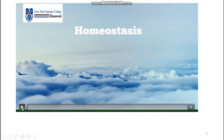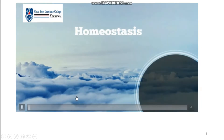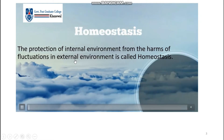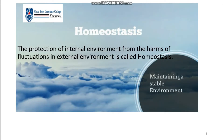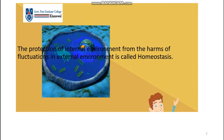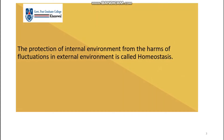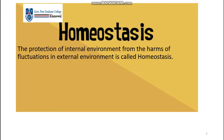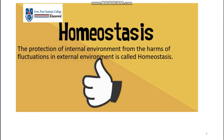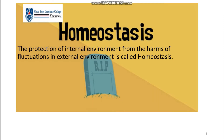First of all we will study about homeostasis. What is homeostasis? Basically, protection of internal environment from the harms of fluctuations in the external environment is called homeostasis. If a cell maintains its internal environment constantly, it will survive. But if any cell does not keep its internal environment constant, it will not survive.